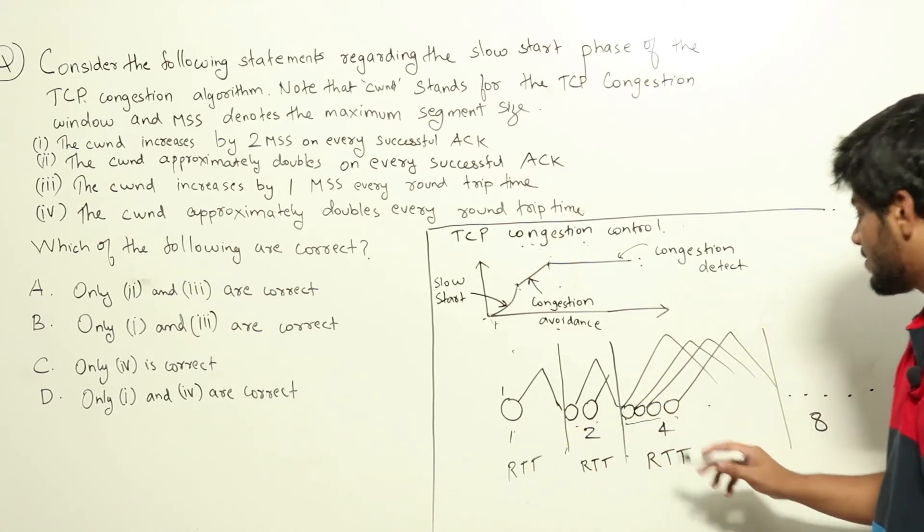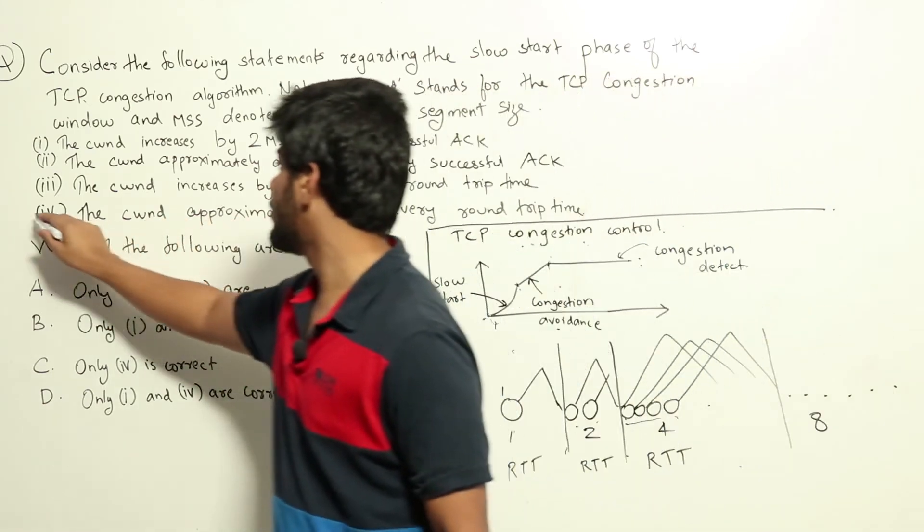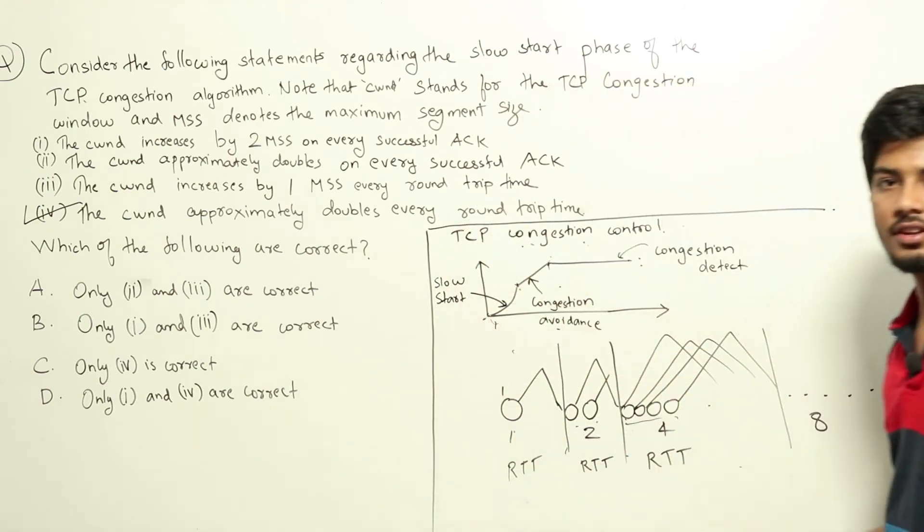So clearly you can see that after every round trip time the congestion window is doubling. Initially it was one, then it was two, then it was four. So from here, option four is correct: the congestion window approximately doubles every round trip time.